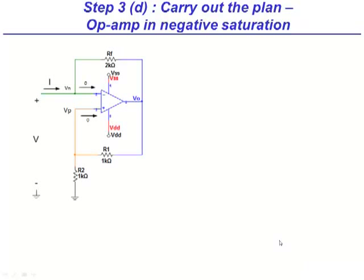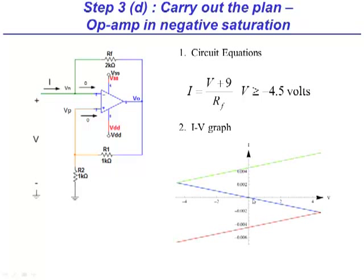Negative saturation works the same way as positive saturation. Notice how the current is positive when the op-amp is in negative saturation. Also notice how the completed op-amp IV is not a straight line. Rather, the function is piecewise linear and overall non-linear.